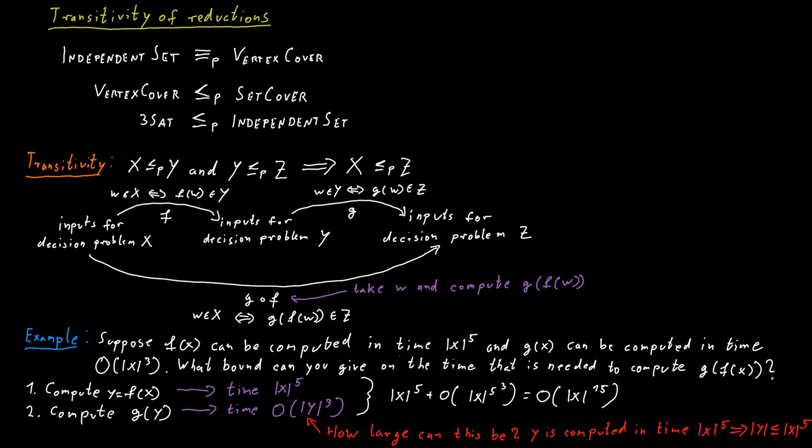So you see this is still polynomial. But we need to multiply the exponents here, three and five. It's not like just an addition or just taking the maximum of the two. They multiply together. So the transitivity of the reduction works. Everything stays polynomial, but the exponent of the polynomial grows quite rapidly.